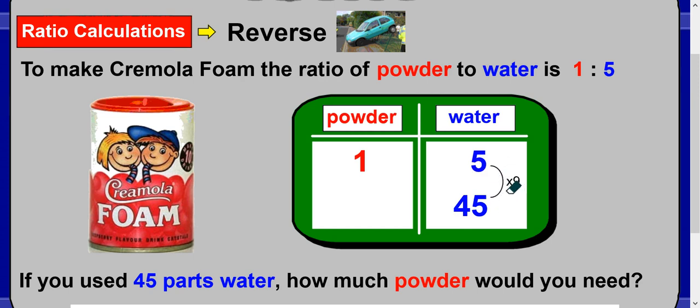Do the same to the other side: one times nine gives you your answer. So 45 parts water needs 9 parts powder. You can write your answer at the bottom: 45 parts water requires 9 parts powder.